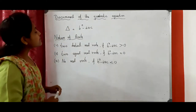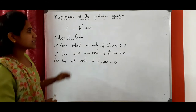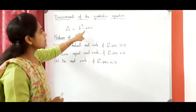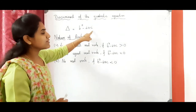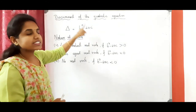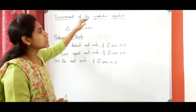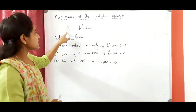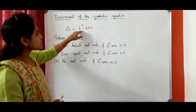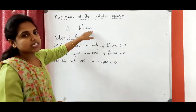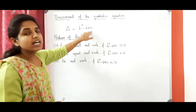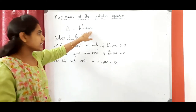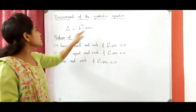First, what is the discriminant of the quadratic equation? The value b squared minus 4ac is called the discriminant of the quadratic equation. So, delta equals b squared minus 4ac. This is the discriminant of the quadratic equation.